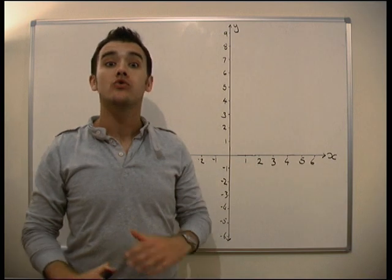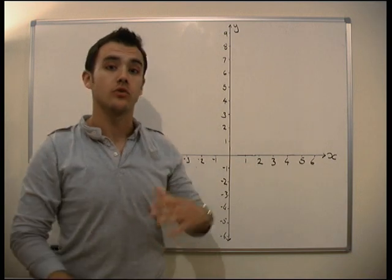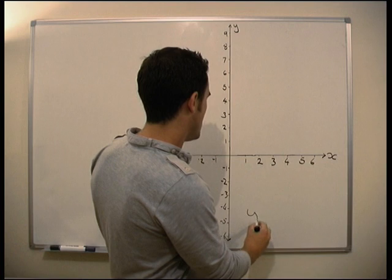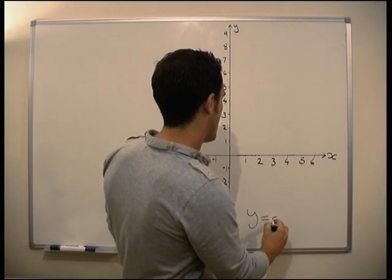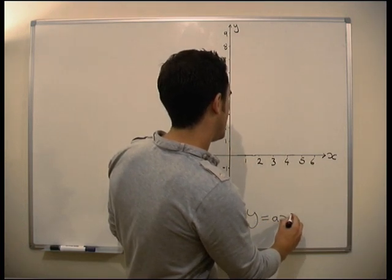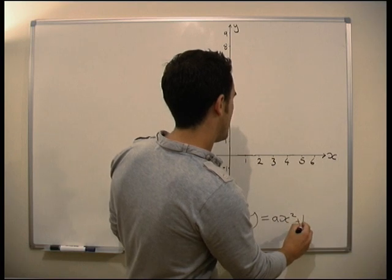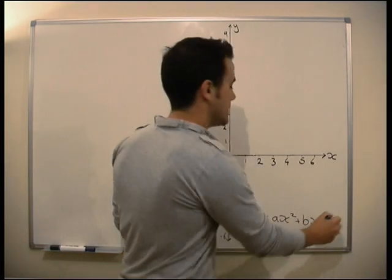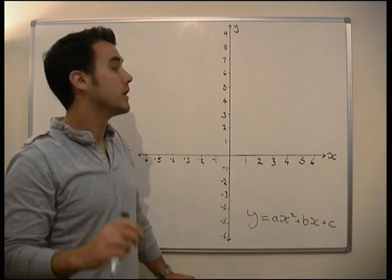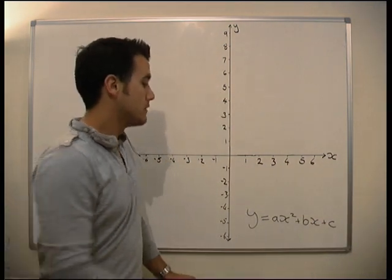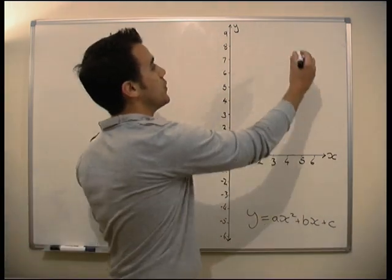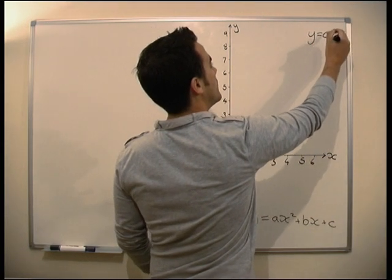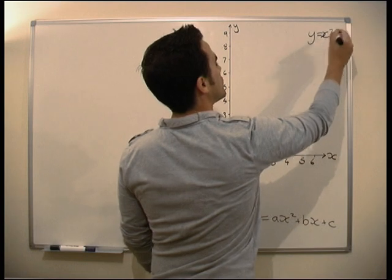Now we're going to look at some quadratic graphs, or a graph that has an x-squared term in it. These are always in the form y equals a times x-squared plus b times x plus c. c is the same as it was before — it's our y-intercept point. So let's look at the most simple ones of these graphs: y equals x-squared.